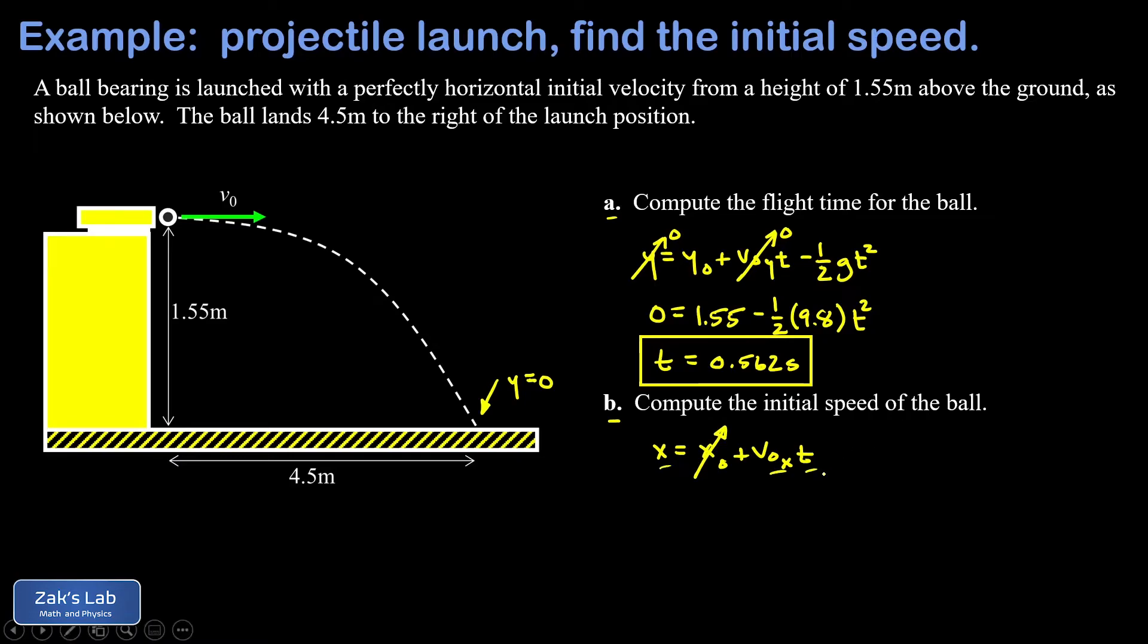And the reason this equation is so simple is because there's no acceleration in the X direction as long as we're neglecting drag forces. Well, that initial X velocity, that's just the muzzle velocity for this spring gun, because that original launch was perfectly horizontal and it was all in the X direction. So I can plug in my final X value for the flight that was 4.5 meters.